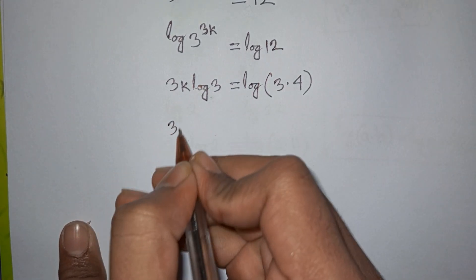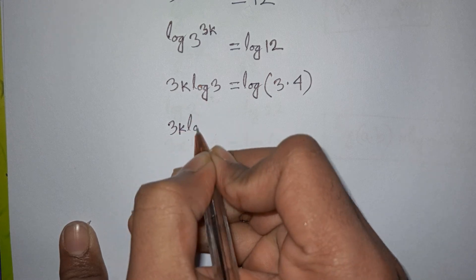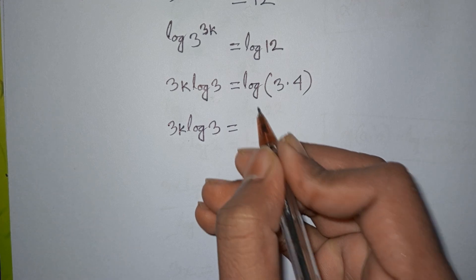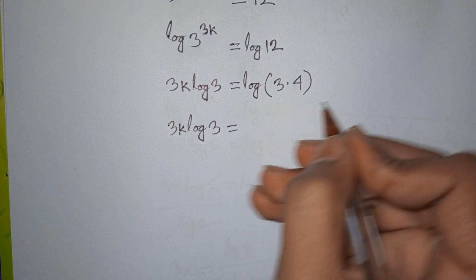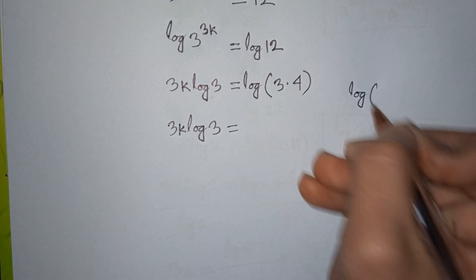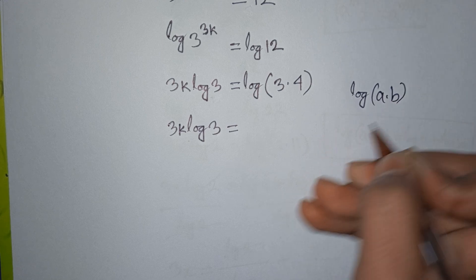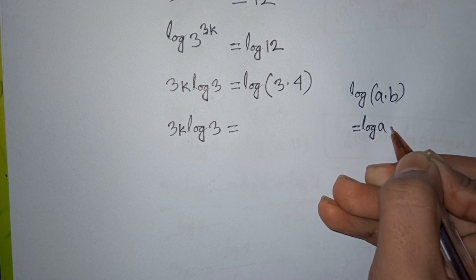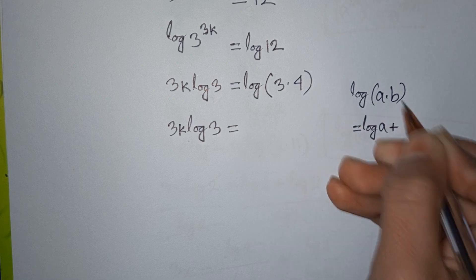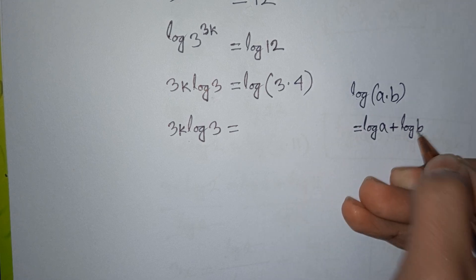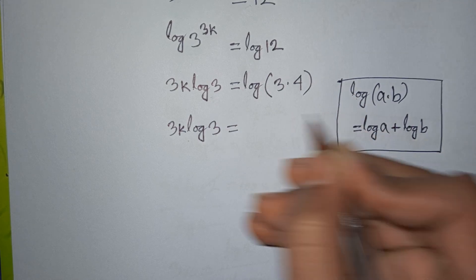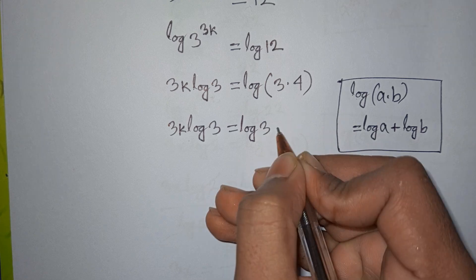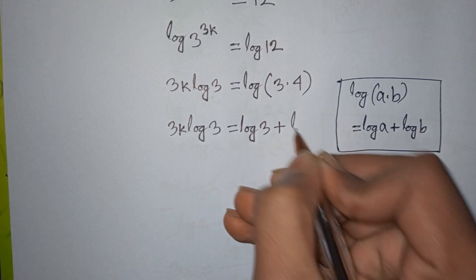We have 3k·log(3) equals log(3 × 4). Using the log product formula, log(a × b) equals log(a) plus log(b), so log(3 × 4) becomes log(3) plus log(4).